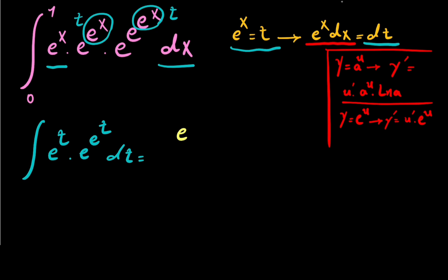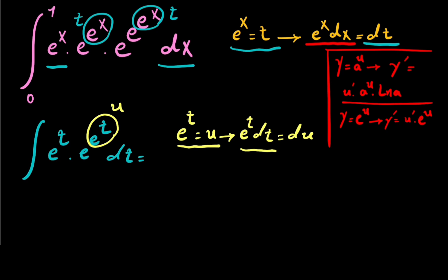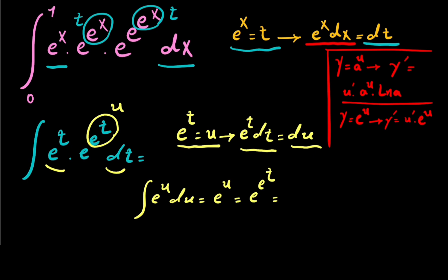Now I write e to the power of t as u. Taking the derivative gives e to the power of t times dt equals du. So instead of e to the power of t we write u, and instead of e to the power of t times dt we write du. Our integral becomes the integral of e to the power of u times du, which equals e to the power of u. Since u equals e to the power of t and t equals e to the power of x, our antiderivative is e to the e to the e to the x.